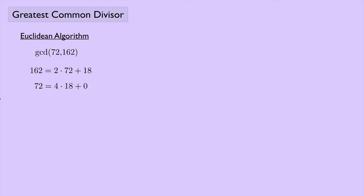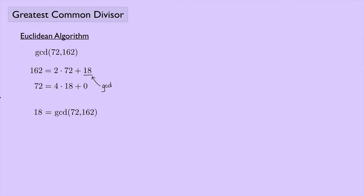Now what we're going to do is look at 72 and see how many times the remainder, 18, goes in. In this case it goes in 4 times, and then we have a remainder of 0. And once you get a remainder of 0, you stop. In this case we would say that 18 — the number right here that we had for the remainder right before we got to 0 — that is the greatest common divisor we're looking for. So the GCD of 72 and 162 is 18.